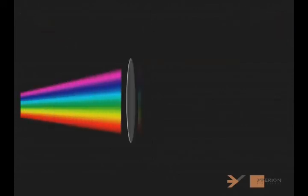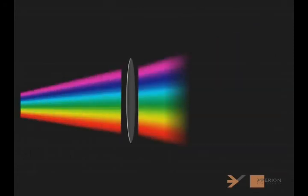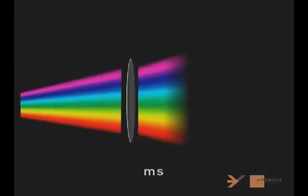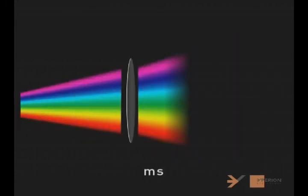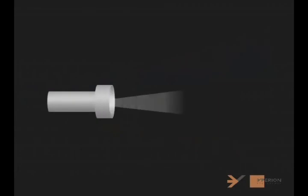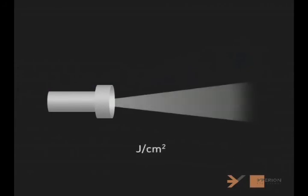Pulsed light is emitted in bursts that last a few milliseconds, called pulses. The pulse duration must be adjustable. The energy from the light beam is called fluence, and it is measured in joules per square centimeter.